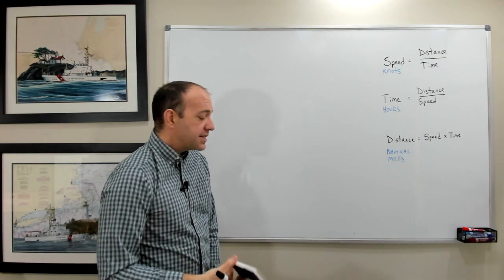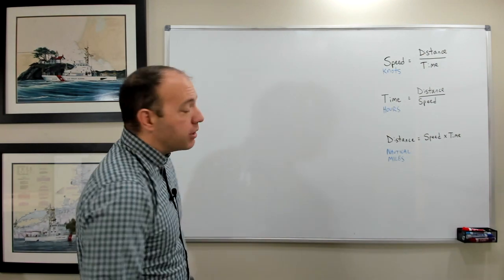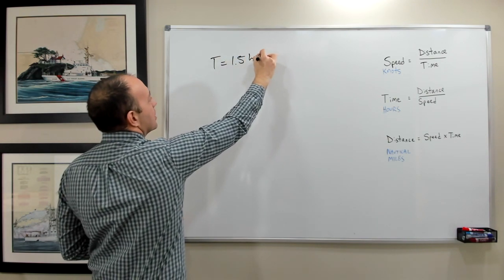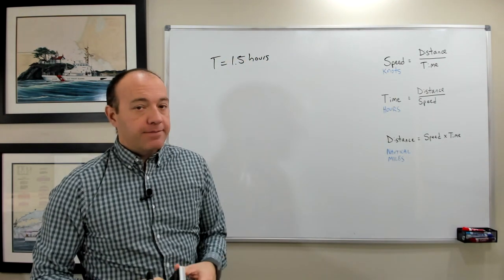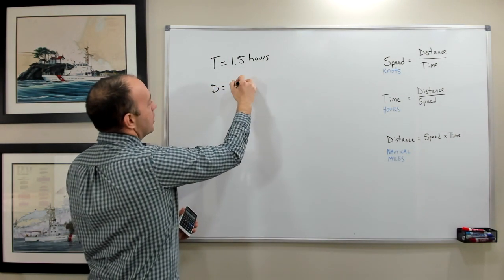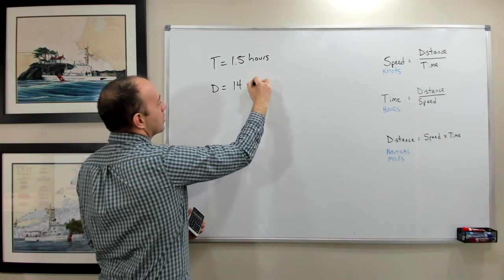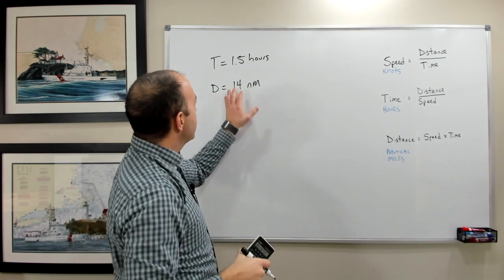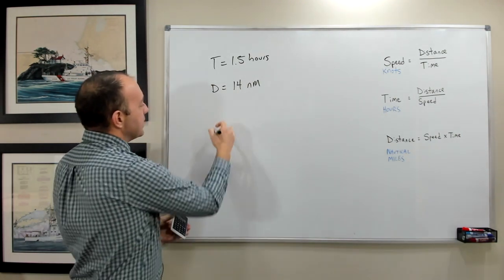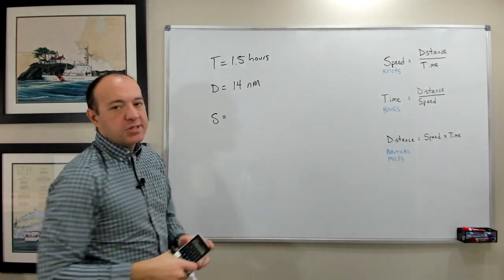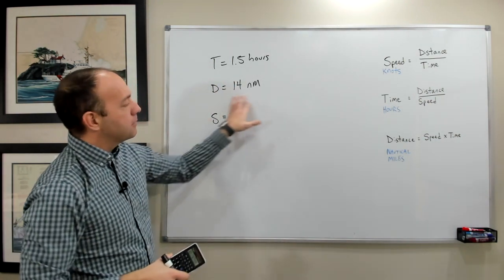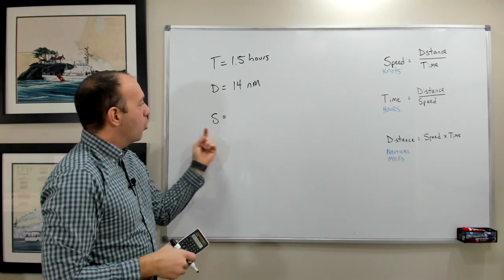Here's a third example. Let's say that over the past 1.5 hours, my time is 1.5 hours, I look in my log book and I've traveled a certain distance. Maybe I've traveled a distance of 14 nautical miles, 14 nautical miles in the past 1.5 hours. Well, what is the speed that I traveled at? We're speed demons, we want to know what our speed was. Over the past 1.5 hours, I traveled 14 nautical miles. What is the speed?